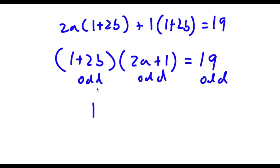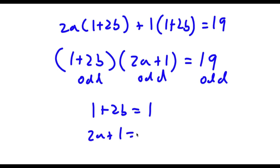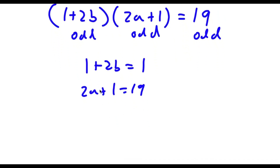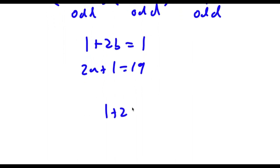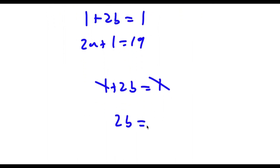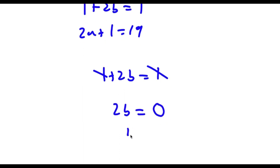If I set (1 plus 2b) equal to 1, then this means that (2a plus 1) has to equal 19, because 1 times 19 is equal to 19. Now if I set (2a plus 1) equals 19, I can simply solve for b and a. Let's first start with 1 plus 2b. So I have 1 plus 2b is equal to 1. I subtract 1 from both sides: 2b is equal to 0, meaning b is equal to 0.